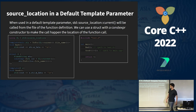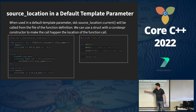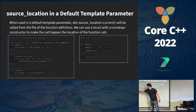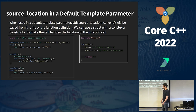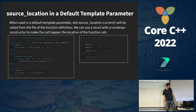As a bonus: if you take the expression from the default template parameter and use it as a default function argument instead, you get different behavior across compilers. So when it comes to default function arguments, I recommend always calling source_location::current() directly to avoid this issue.